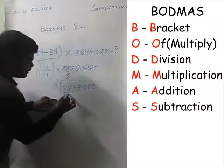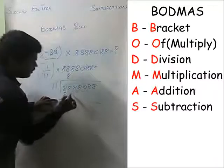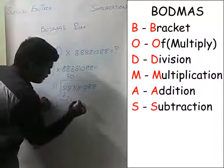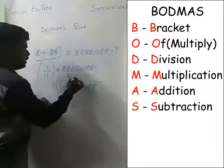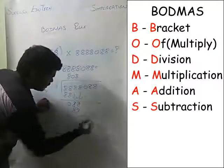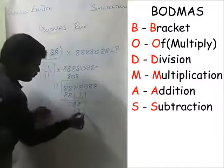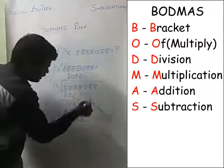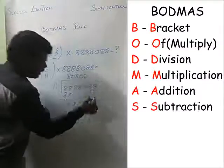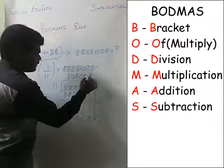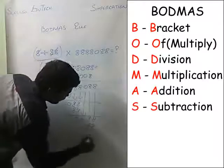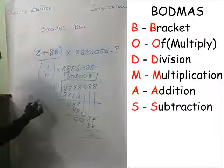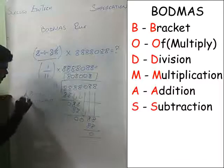Dividing 8888 by 11: 8 elevens are 88, remainder 0; bring down 8, giving 08; 8 elevens are 88, remainder 0; and so on. The final answer works out to 808.08 — your final answer from this division process.